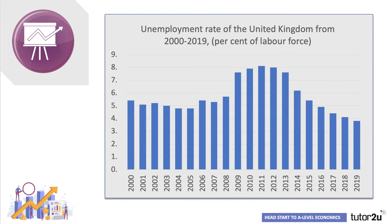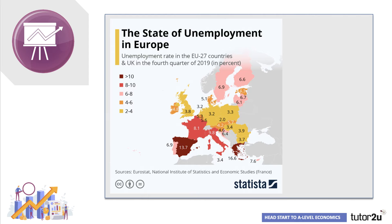This unemployment chart for the UK will inevitably look very different in the next few months, and certainly over the course of the next year or two. The economic crisis resulting from the global pandemic has led to severe social distancing measures, effectively locking down many parts of the economy. As a result, hundreds of thousands of people have already lost their jobs, and millions more have been furloughed by their employers who are looking to take advantage of the job retention scheme.